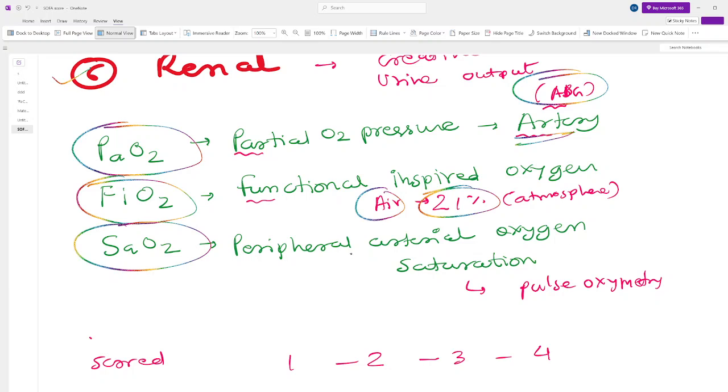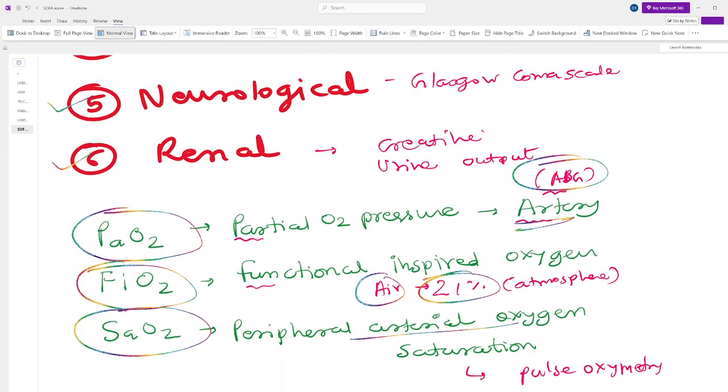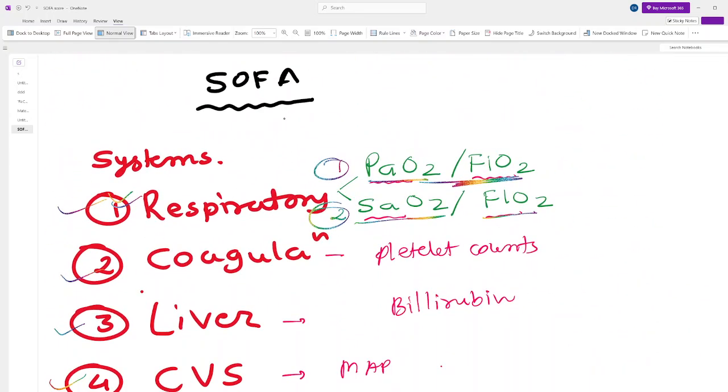It is peripheral arterial oxygen saturation. If you have done the ABG or if you know FiO2 and SaO2, you can have this ratio. So respiratory system can be easily measured. The whole idea of having this SOFA score is to suspect sepsis, so it must be very easy to measure.